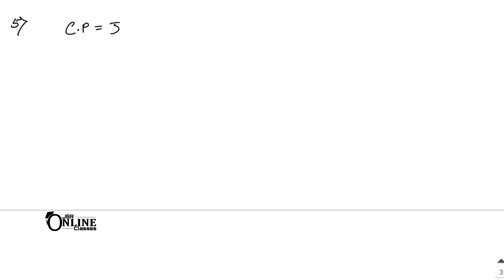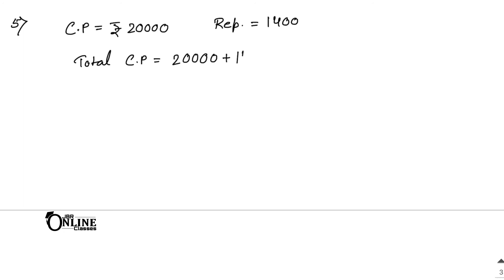Sum number five: the cost of an article was 20,000, so CP equals rupees 20,000. 1400 was spent on its repair, so repairing charge equals 1400. It is sold for a profit of 20%. First find the total CP: 20,000 plus 1400 equals 21,400. Percentage of profit equals 20%.